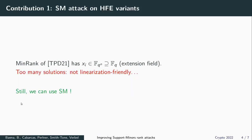A first contribution was trying to propose a similar attack on HFE variants by using the same min-rank instance as in Tao et al., but this time using support miners. A difficulty was that this min-rank problem has too many solutions, which directly come from the extension field structure Fqn used in HFE, making it clearly impossible to perform the initial linearization technique on the support miner system.